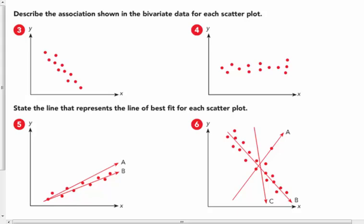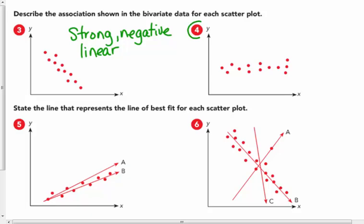Describe the association shown in the bivariate data for each scatter plot. I'm going to answer number three. Number three looks to me like a strong, negative, and linear association. I'm going to let you answer number four on your own.